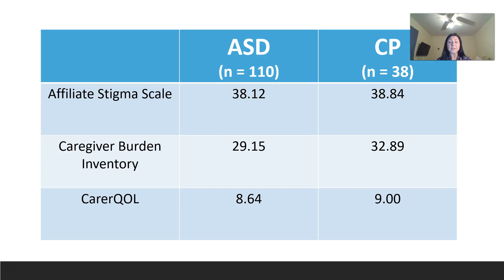In terms of care quality of life, these scores indicated fair care given conditions. For parents of children with cerebral palsy, our results actually contrasted previous studies which indicated those parents had a poor quality of life and mental health.